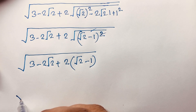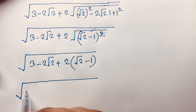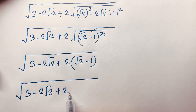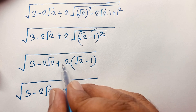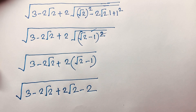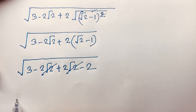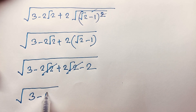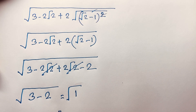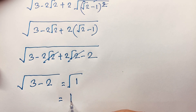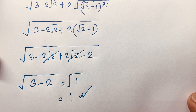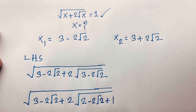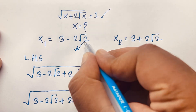Now substituting, we get square root of (3 minus 2 square root 2 plus 2 times (square root 2 minus 1)). That gives 2 times square root 2 minus 2, so the 2 square root 2 terms cancel out. We find square root of (3 minus 2) equals square root of 1, and square root 1 equals 1. So left-hand side equals right-hand side, confirming x equals 3 minus 2 square root 2 is the correct answer.